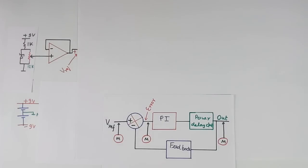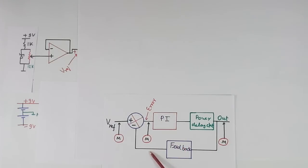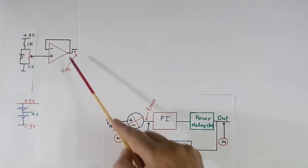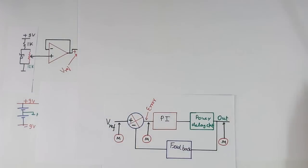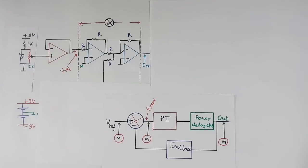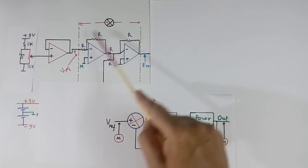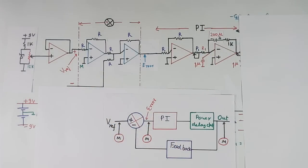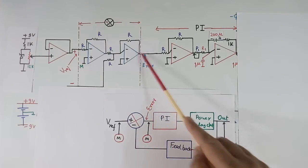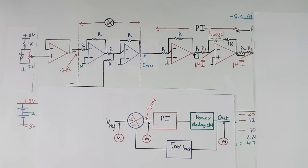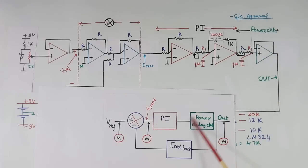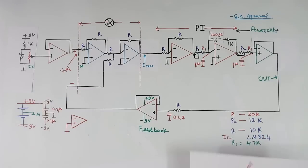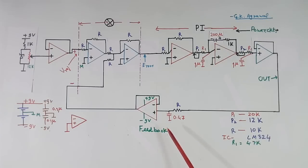Now I will explain the circuit diagram of the simulator step by step. This reference point is this — reference is generated using this circuit. This block is this block. It has this plus terminal, this minus terminal, and this is the error. This block is the PI controller. And this block is the power circuit. And then we have the feedback circuit. This circuit is used when I was using the multimeter.